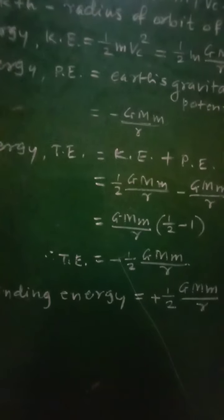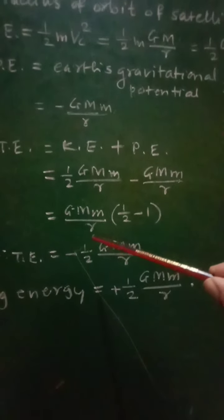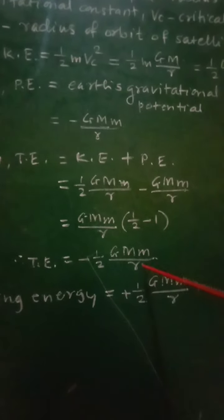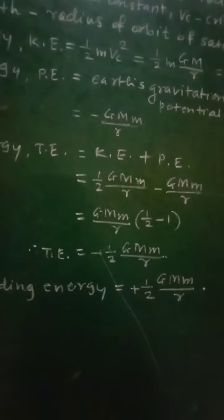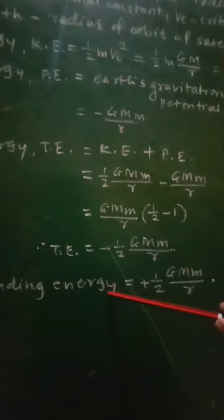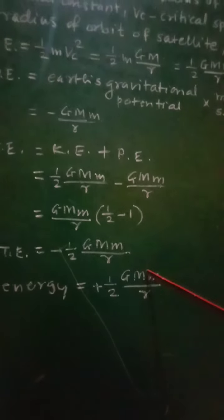In order to make the satellite free from Earth's gravitational influence, the minimum energy to be supplied must be opposite to the total energy, that is plus half GMm upon r. When this energy is supplied, the satellite will escape from Earth's gravitational field. That energy is nothing but the binding energy. Therefore, binding energy of the satellite equals plus half GMm upon R.